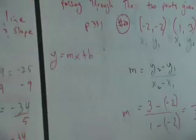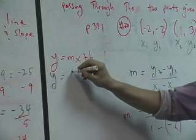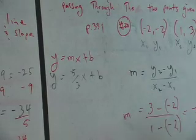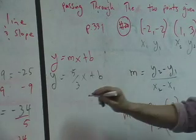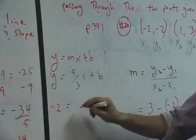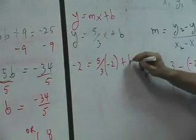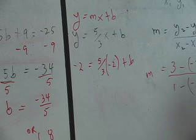Right here, Y equals MX plus B. We've got to use M, and we're going to use Y and X. Which X and Y do we use, Adam? Which one do we use? Doesn't matter which one we use. We can use negative 2 and negative 2, for instance. Negative 2 equals 5 over 3 times negative 2 plus B. And then we go ahead and finish this off. I'm going to do it quickly because we have to go.